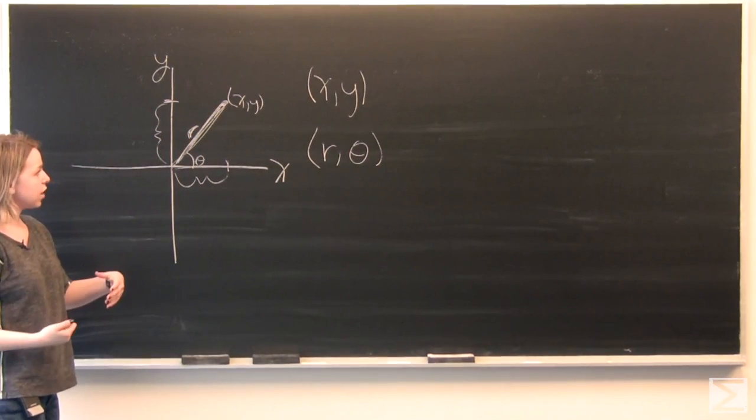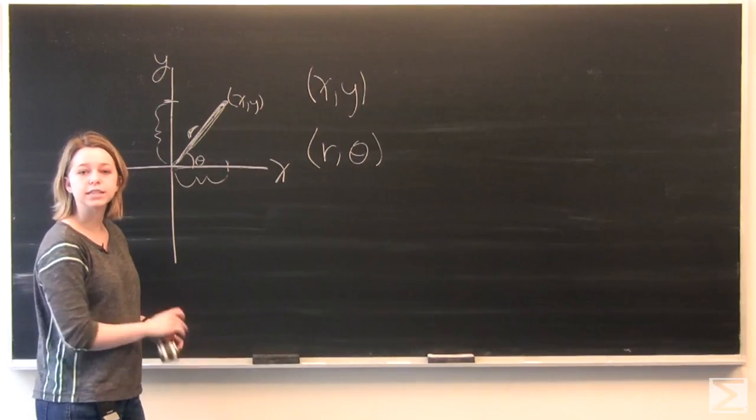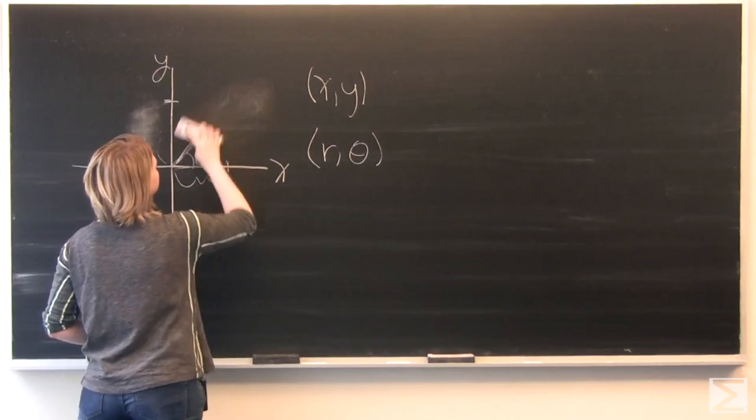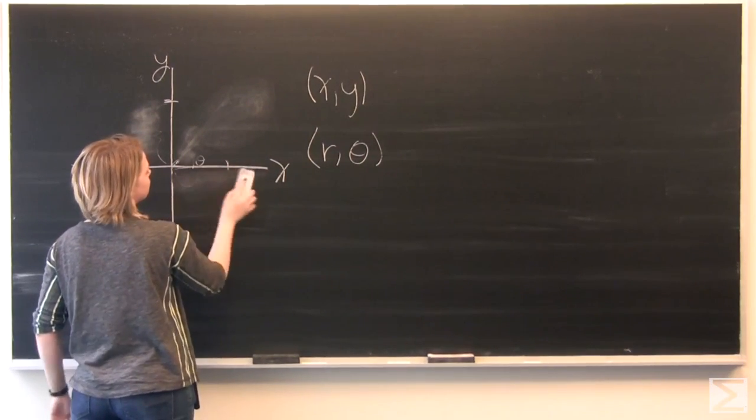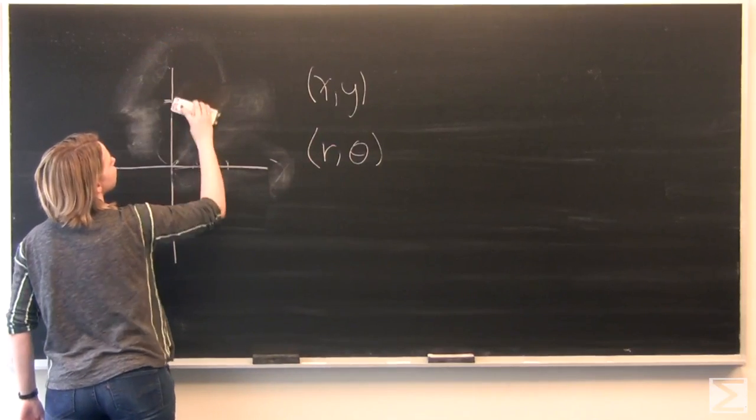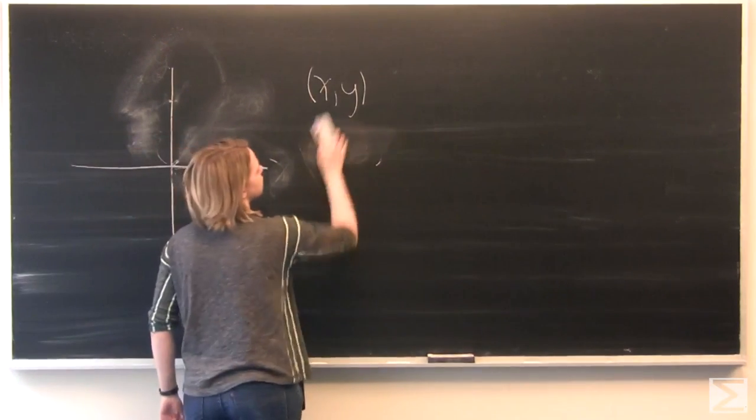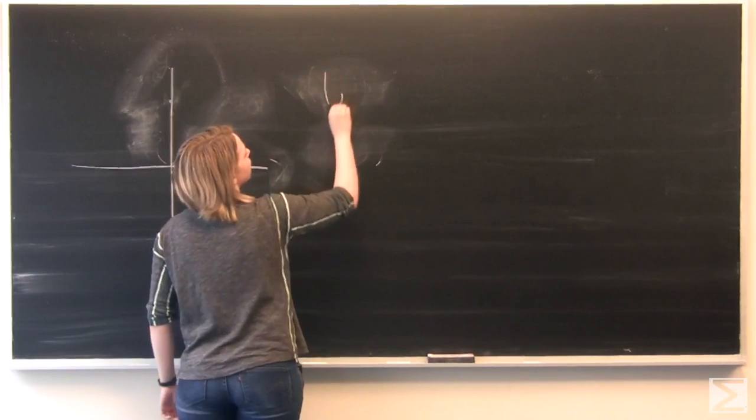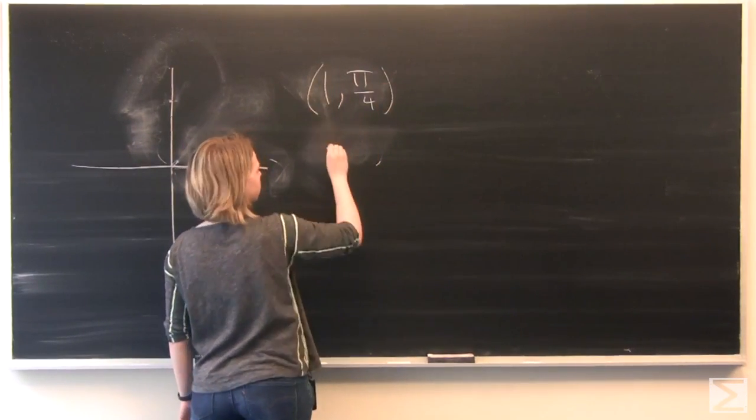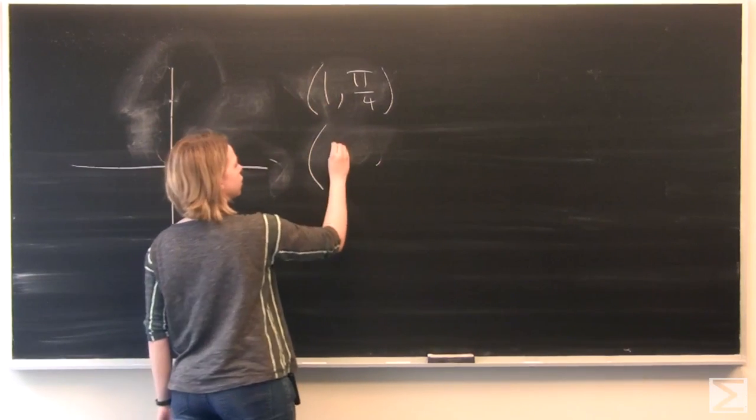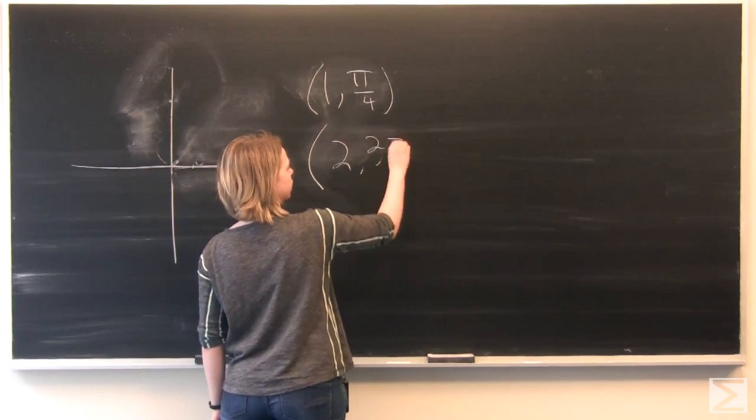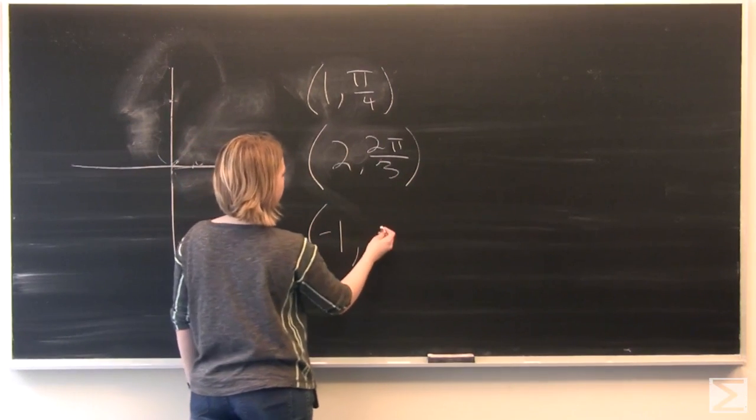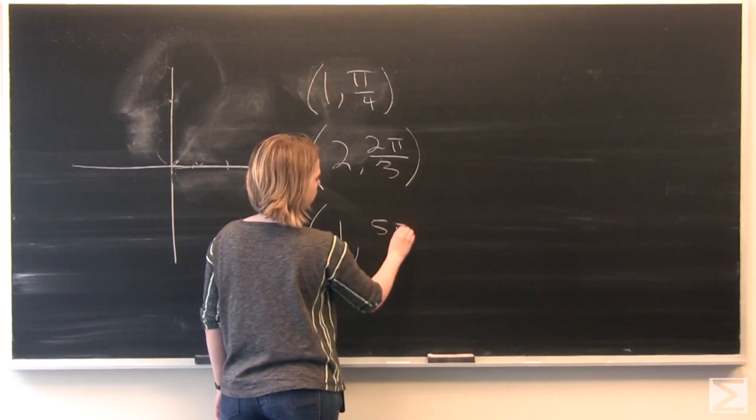Let's talk about how to plot different points in polar coordinates. Let's do three different points. Let's start with 1 pi over 4, and we'll also do 2, 2 pi over 3. And just to see negative numbers, let's do negative 1, 5 pi over 4.